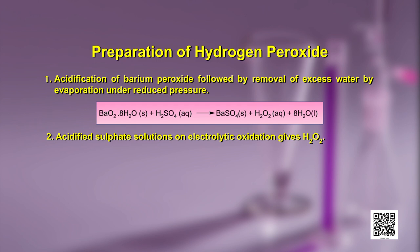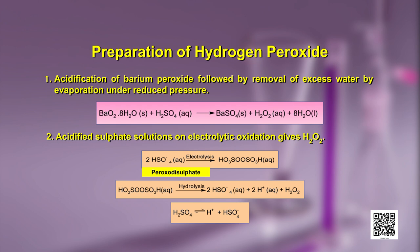The second method is acidified sulphate solutions on electrolytic oxidation give hydrogen peroxide. The reaction is: 2 HSO₄⁻ in aqueous medium on electrolysis gives H₂S₂O₈, which is the peroxodisulfate anion. On hydrolysis, the equation gives us 2 HSO₄⁻ (aq) + 2 H⁺ (aq) + H₂O₂.